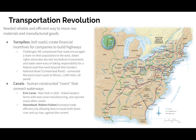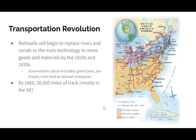The steamboat, invented by Robert Fulton, increased trade efficiency by allowing boats to travel both down and up rivers against the current. The railroad became the superstar of transportation in the 1850s, though it started becoming a main technology for transporting goods as early as the 1820s and 1830s. Governments granted loans, tax breaks, and even land to railroad companies to build. By 1860, 30,000 miles of track had been laid — mostly in the Northeast — to move manufactured goods and raw materials.